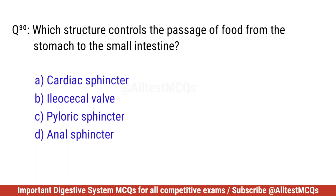Question thirty. Which structure controls the passage of food from the stomach to the small intestine? Right option is C. Pyloric sphincter.